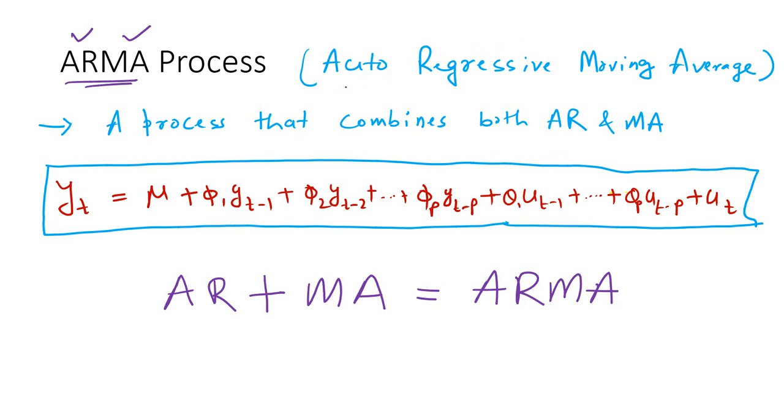When we expand it, we call it as autoregressive moving average process. It is a process that combines both AR and MA process.